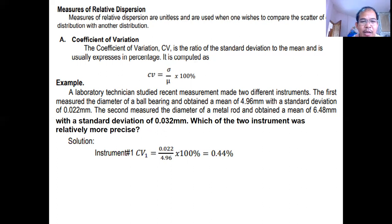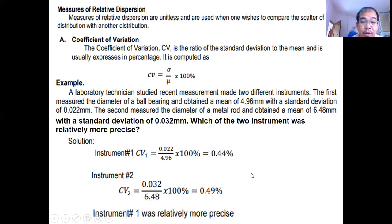Let's have instrument one. Ang standard deviation ng instrument one is 0.022. Ang mean is 4.96. Ang standard deviation is 0.032. Ang mean is 6.48 times 100 is 0.49. So, lesser CV ng instrument one. So, our conclusion would be instrument one was relatively more precise compared to instrument two.